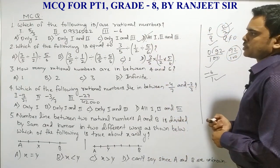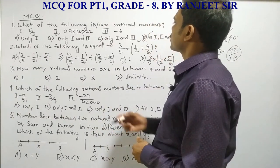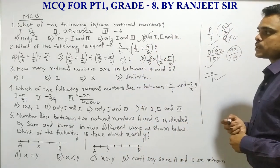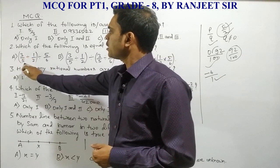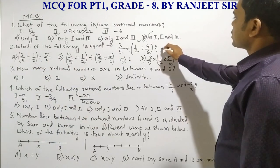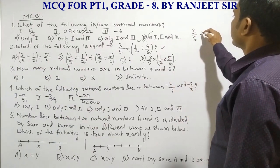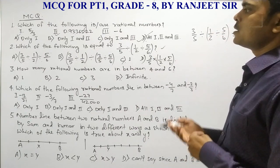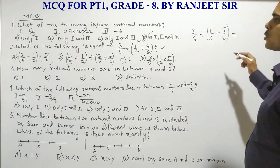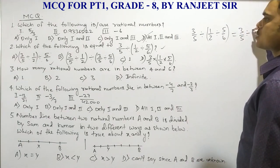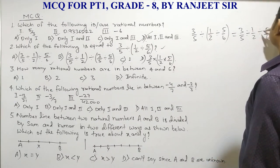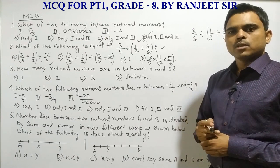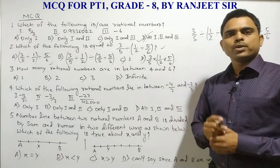Question number two: which of the following is equal to 3/5 ÷ (1/2 ÷ 5/6)? Option A shows 3/5 ÷ 1/2 ÷ 5/6 without the inner bracket. I'm writing this out: in LHS we have 3/5 ÷ (1/2 ÷ 5/6), and in RHS we have 3/5 ÷ 1/2 ÷ 5/6. Properties of rational numbers have been explained in previous videos if you need to review.